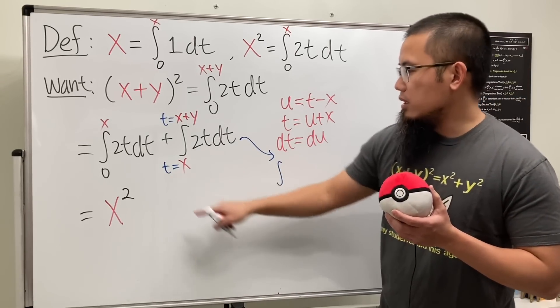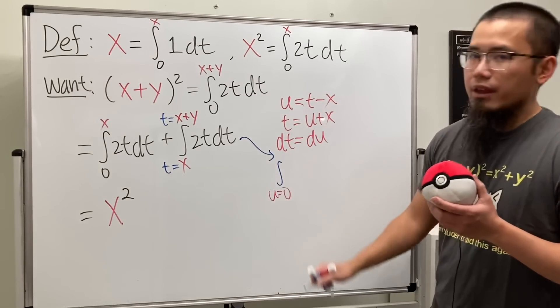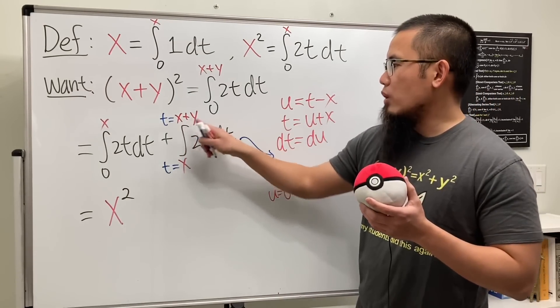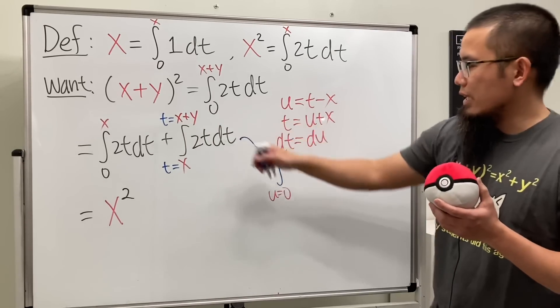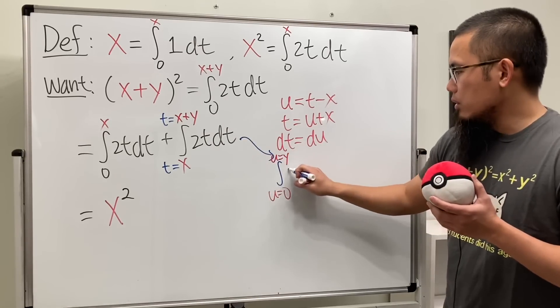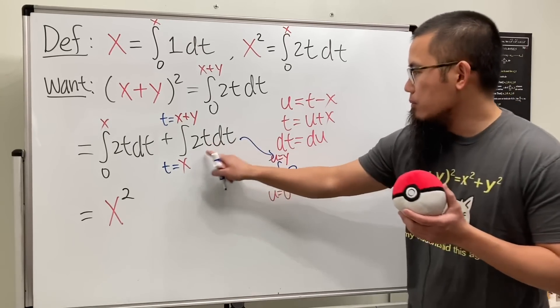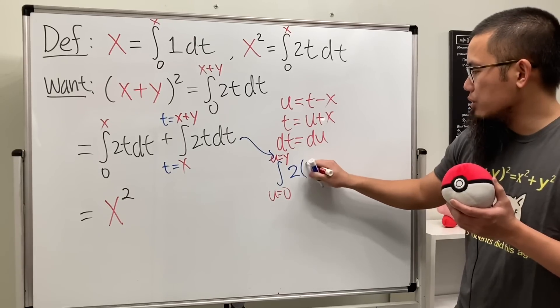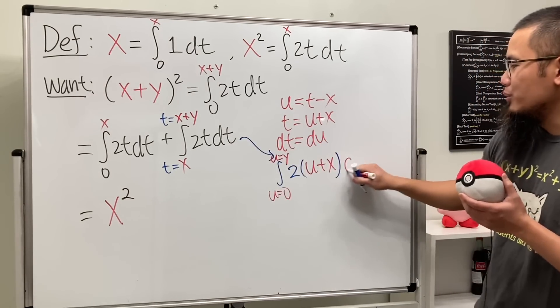When x is for the t, we put it here. We get u is going to be 0. And when we have x+y for the t, we put it here. The x and x cancel, so we just have the y right here. So, so far so good. And then, we have the 2. And then, we have the t. But we want to be in the u world. So, let's put this down right here, which is u+x. And then, dt is equal to du. Cool.